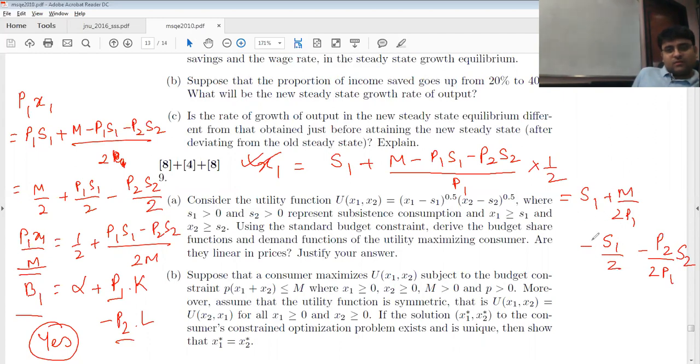Is this linear in terms of the prices? I have a p1 here in the denominator. I have a p1 here in the denominator. Is this linear in the prices? No. Can this be expressed as p1 into k minus p2 into some l? No, I have a p2 by p1 expression here and I have a 1 by p1 expression here. That is obviously not linear in prices.